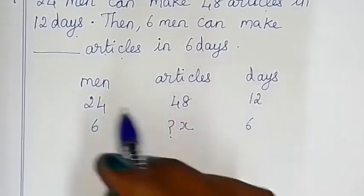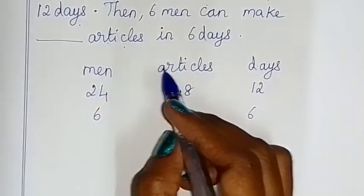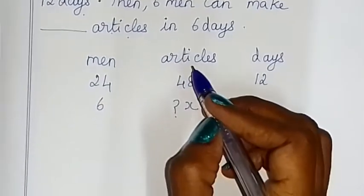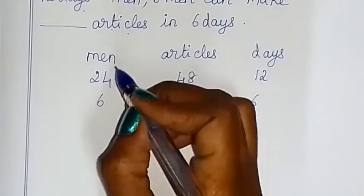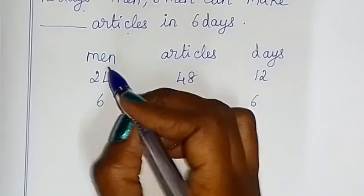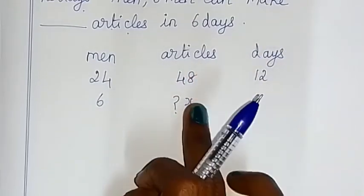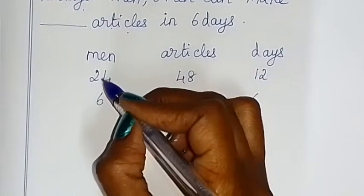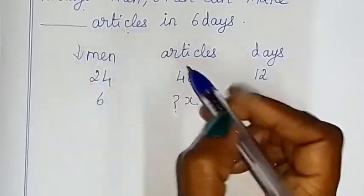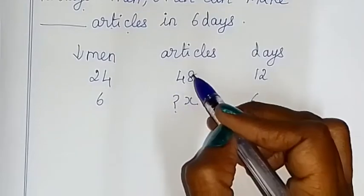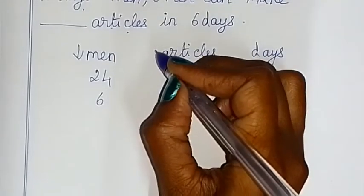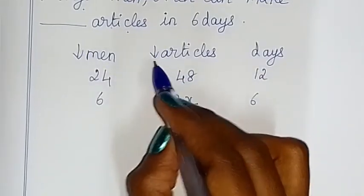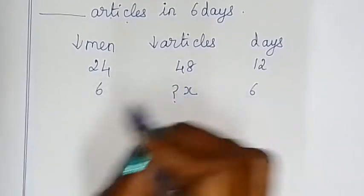Now check direct proportion and inverse proportion. For direct proportion, first take the reciprocal. Change potential — as simple as multiplication, using the multiplying factor first. Then fill in the series. Now the number of men decreases — there are fewer men making fewer articles. So here is a decrease, and the same decrease means direct proportion.